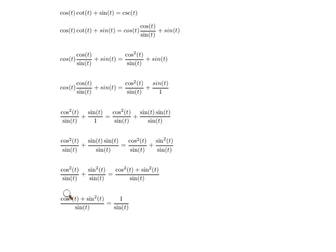And so now this part really becomes one over the sine of t because the cosine squared of t plus sine squared of t is just one. And that's an identity that we know one over the sine of t really is just the cosecant of t. That's a reciprocal relation. So we started with this left hand side and just showed how to simplify it to be the right hand side.